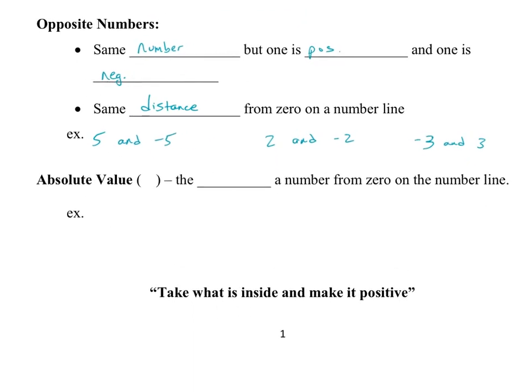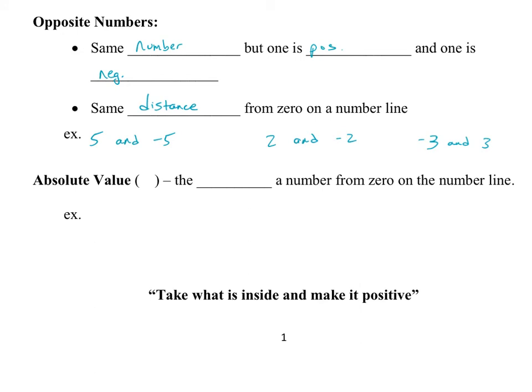That kind of fits the definition of absolute value. When you have absolute value, you have these two vertical lines, and the technical definition is it's the distance a number is from zero on the number line. So when we look at absolute value of negative 2, well negative 2 is two away from zero on the number line, so it's 2. Or if you have absolute value of 4, well 4 is four to the right of zero, so it's 4.